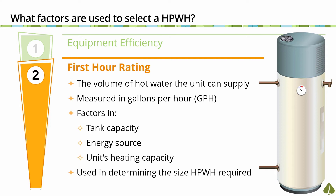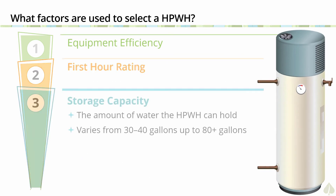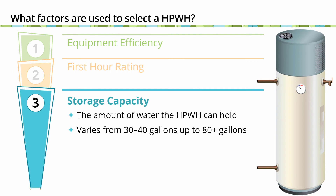The third factor is storage capacity. Heat pump water heaters store hot water in a tank and come in various sizes based on storage capacity, ranging from 30 to 40 gallons up to 80 plus gallons. The larger the tank capacity, the more volume of hot water is available.